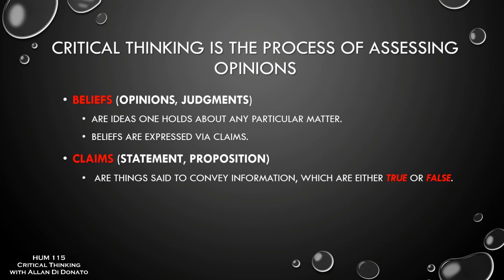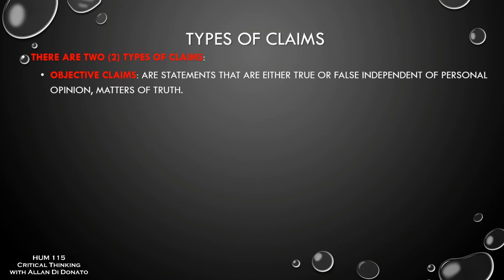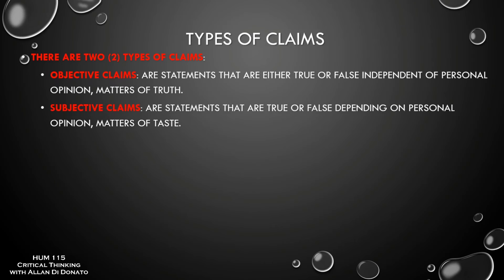If something is not true or false, it's not a claim. Lots of sentences are not claims — for example, a question. If I ask 'what time is it?' and you say 'false,' that's nonsense. That's one sure way to know whether you're dealing with a claim or not. Two types of claims are objective claims and subjective claims. An objective claim is any statement that's true or false independent of personal opinion.